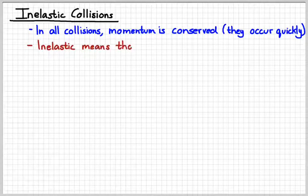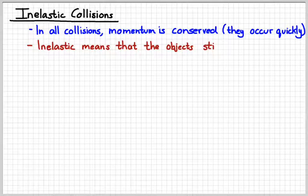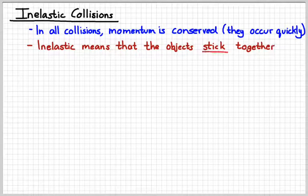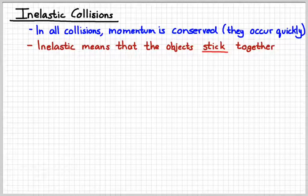In an inelastic collision, that means that the objects physically stick or lock together after the collision. Think about two pieces of Velcro colliding and then sticking together. That would be an example of an inelastic collision.